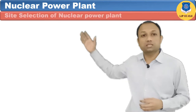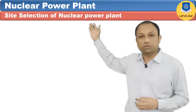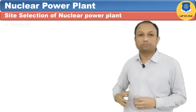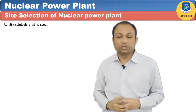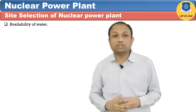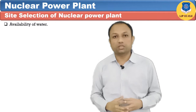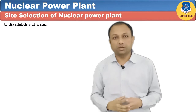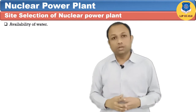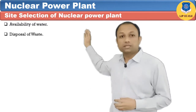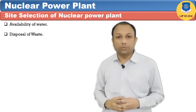Let's discuss the site selection of a nuclear power plant. First, availability of water: a sufficient supply of water is essential for generating steam and for cooling purposes in the nuclear power plant. Second, disposal of waste: the waste of a nuclear power plant is radioactive and may cause severe health hazards.